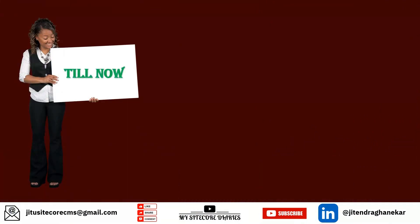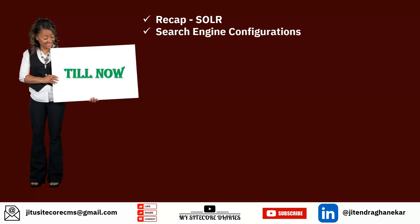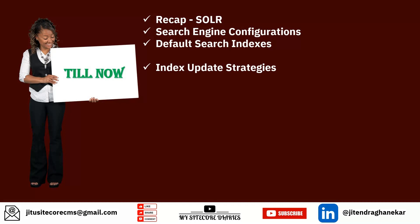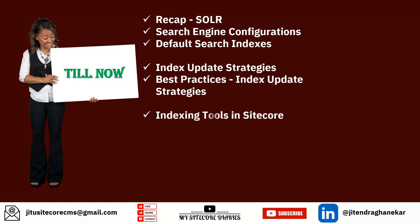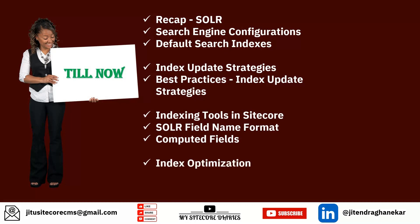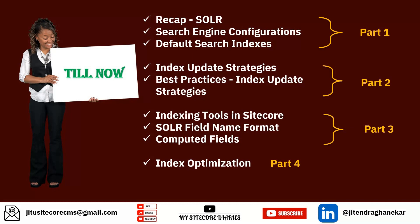So what we have seen till now in this series: we have seen what is SOLR and done a recap of SOLR. Then we have seen the default search engine configurations for Sitecore, the different default search indexes, index and index update strategies, best practices of index update strategies, indexing tools in Sitecore, SOLR field name format, computed fields, and index optimization. That covers the four parts already done. I'll give you the link to the series in the description and comments. Along with those four videos, we have two additional videos for SOLR introduction and SOLR installation, so total six videos are already done. This is the last video of this series.